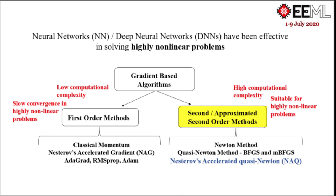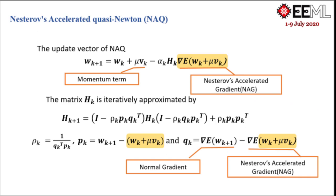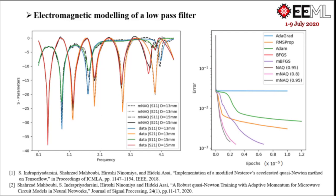The focus of my research is on Nesterov's accelerated quasi-Newton method to further accelerate convergence speed while maintaining a low computational cost. On the application front, I focus on Electronic Design Automation to provide faster and reliable solutions using deep learning. In the coming slides, I'll briefly skim through some of the results of my work so far.